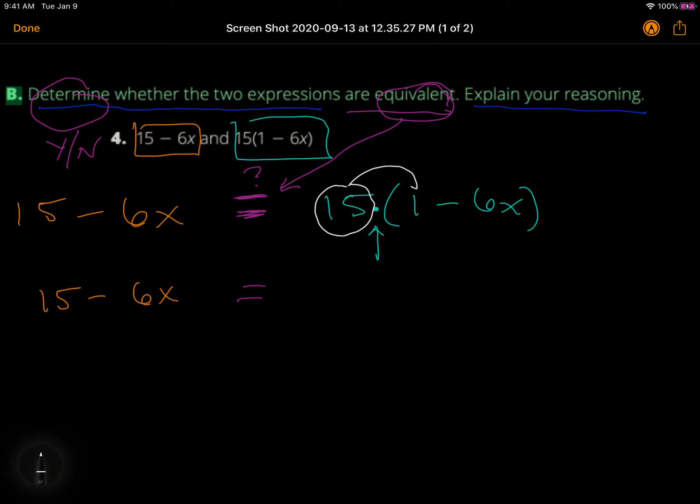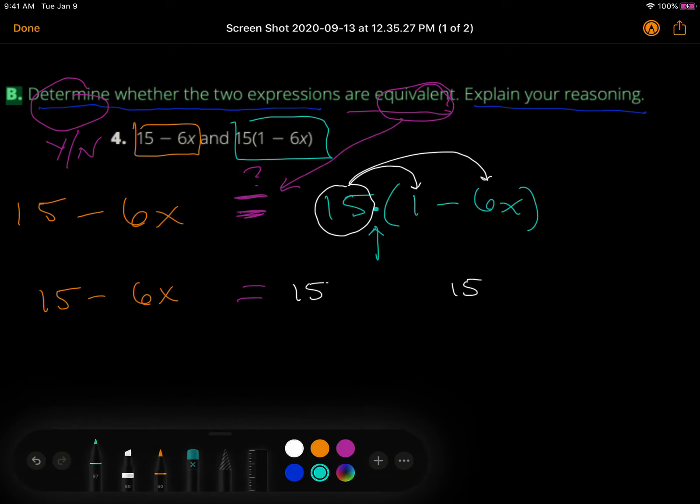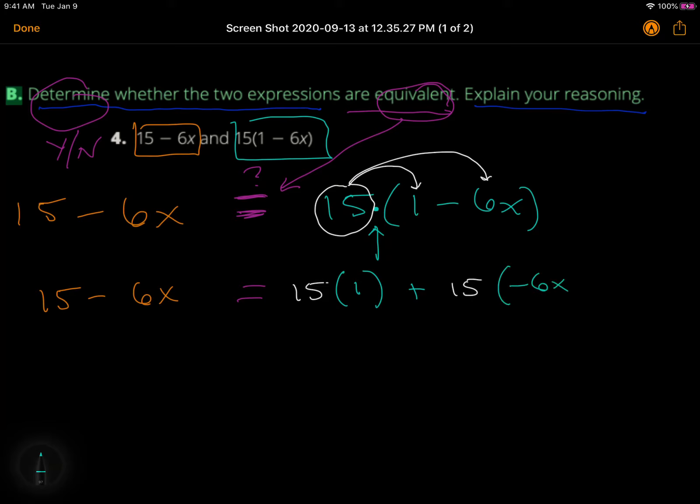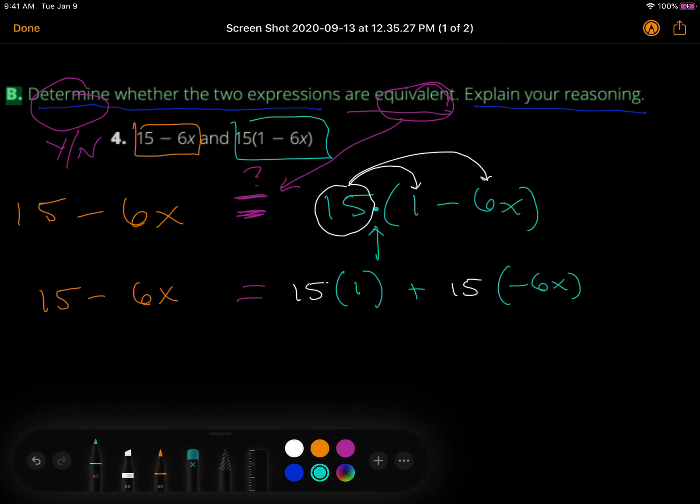Multiplying means 15 times 1 and 15 times a negative 6x. So I'm going to write this 15 twice in white. Here is the 1. And then the 15 is positive, so times a negative 6x. Let's clean that up.